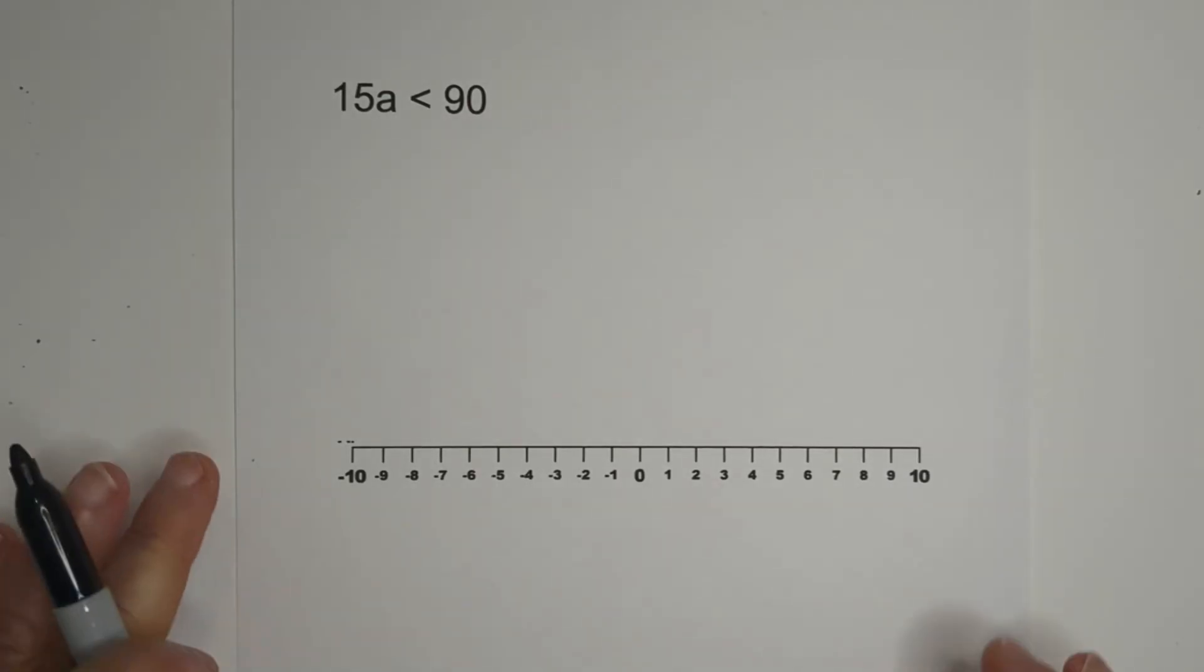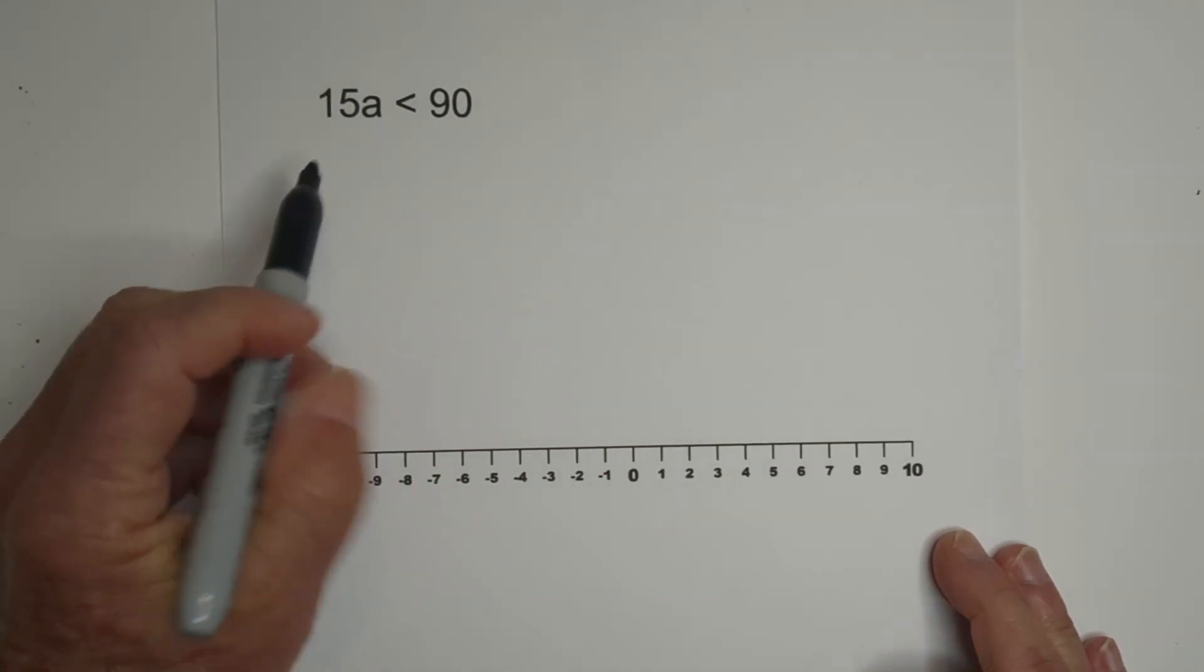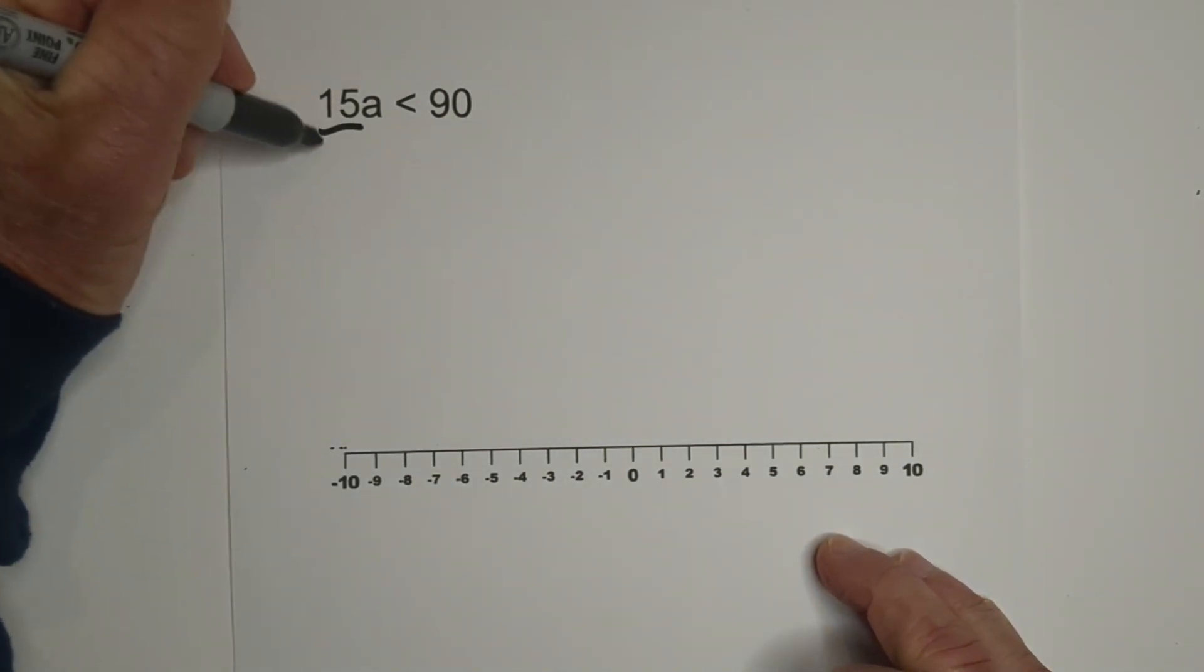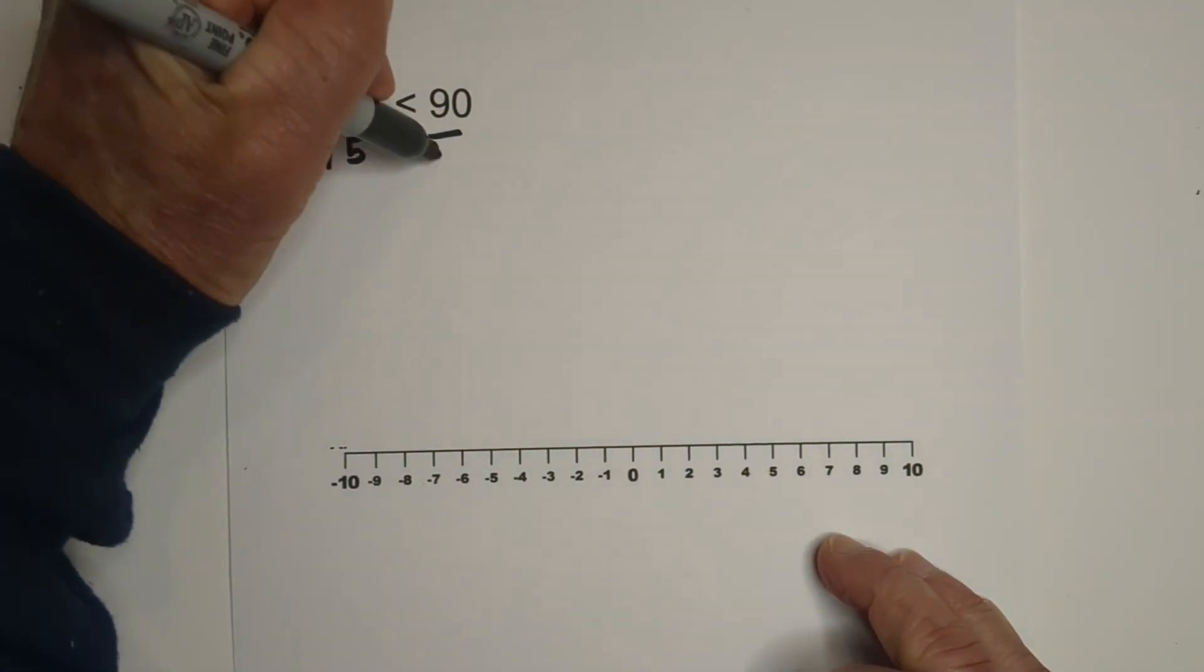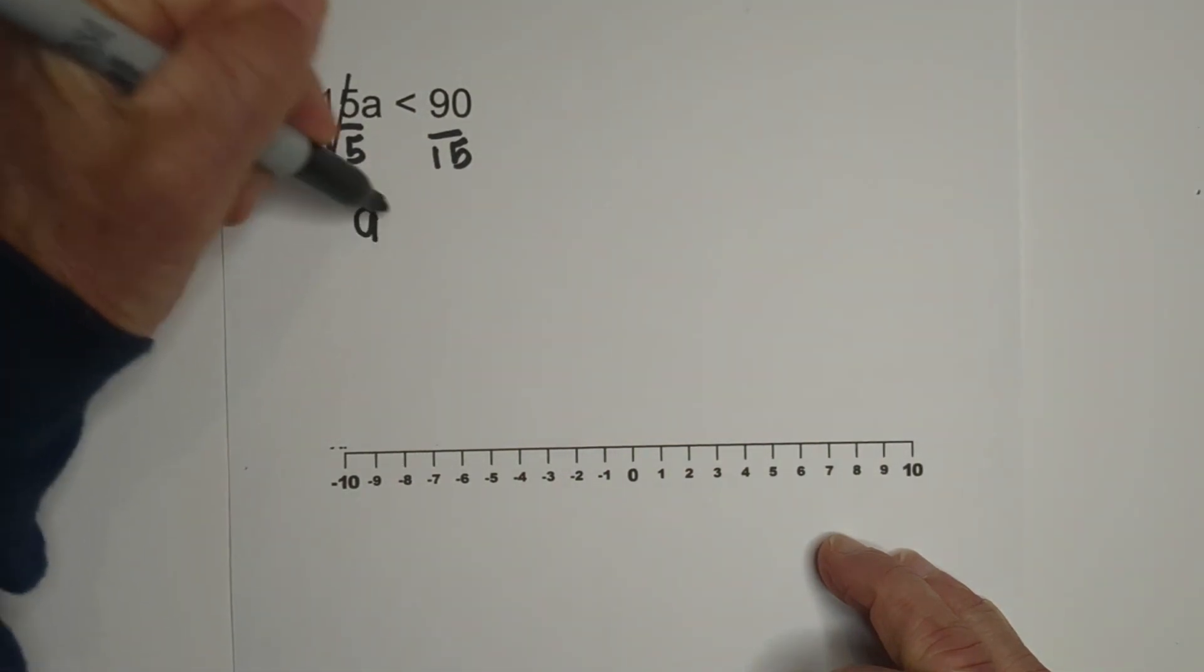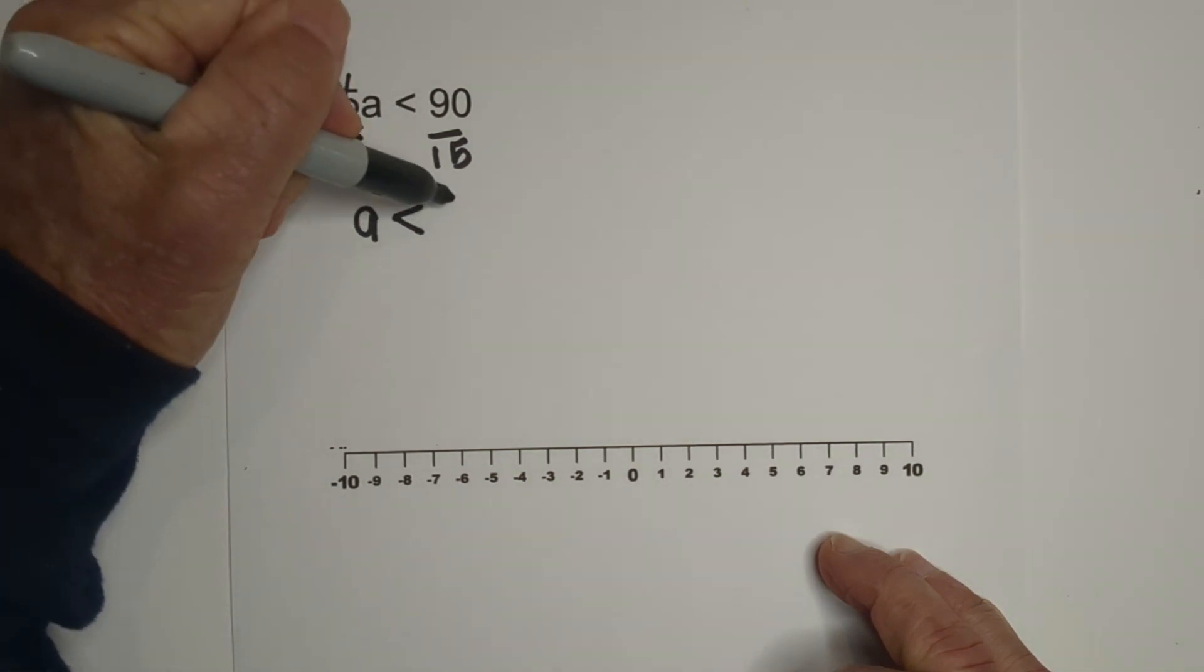So let's solve this inequality and then graph it. We need to get A by itself, so we will create an inverse operation, divide both sides by 15. When we do this, these cancel, bring down the A. So A is less than 90 divided by 15 is 6.